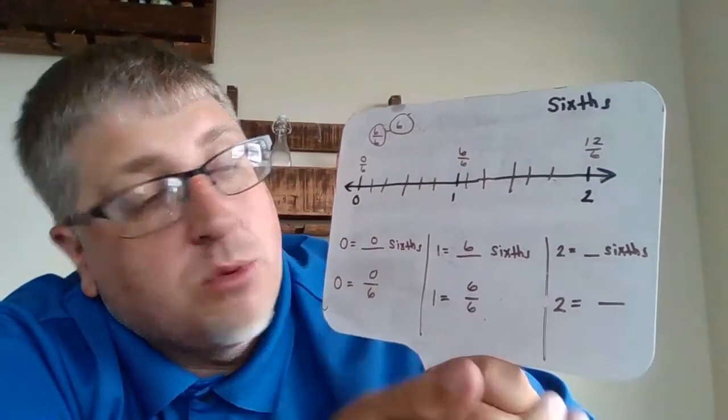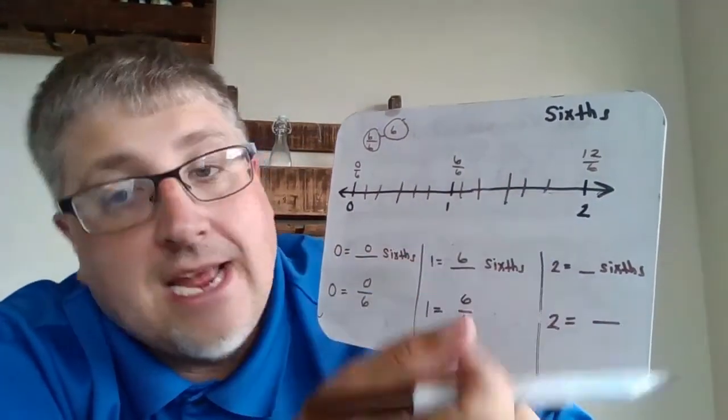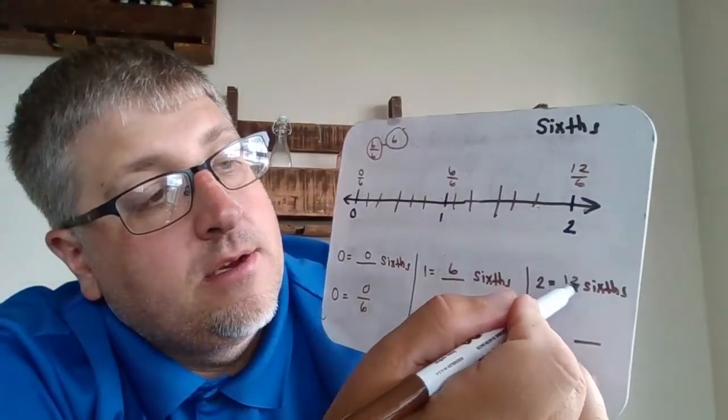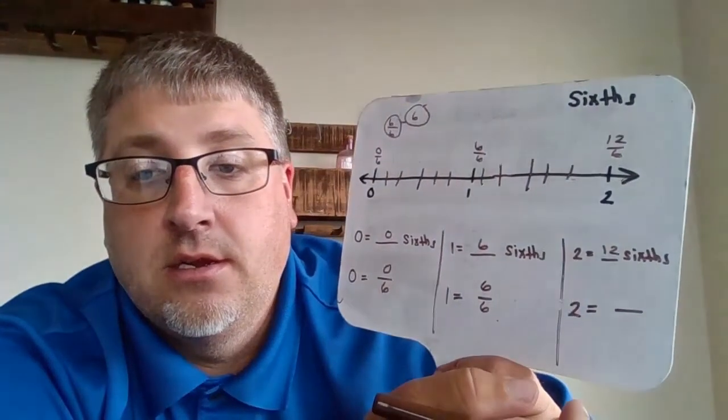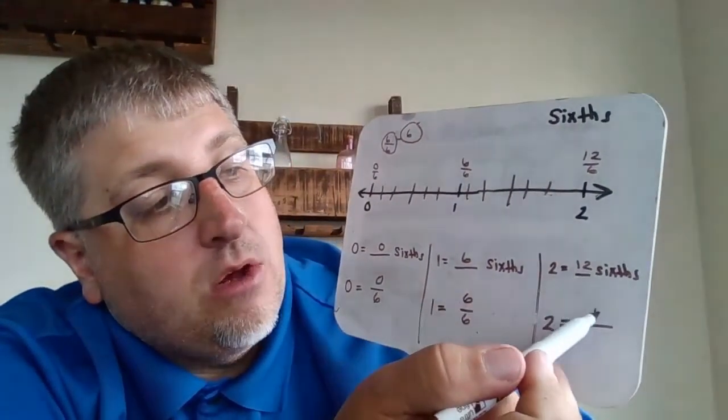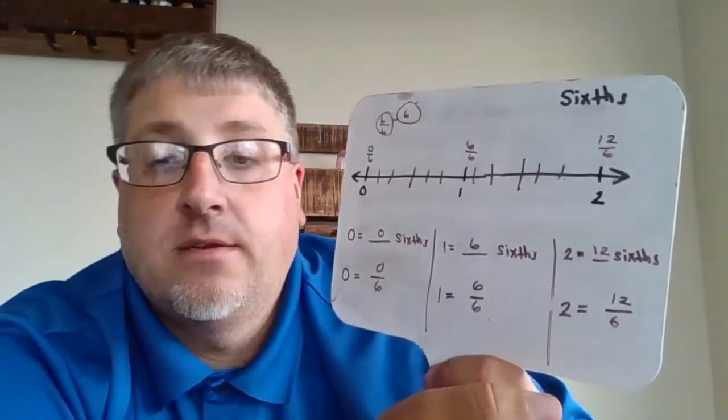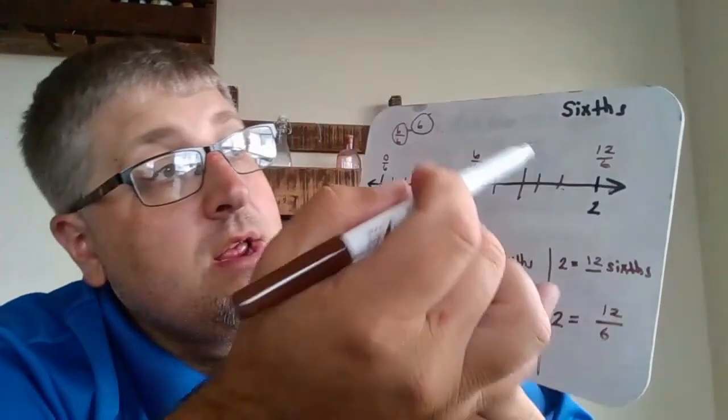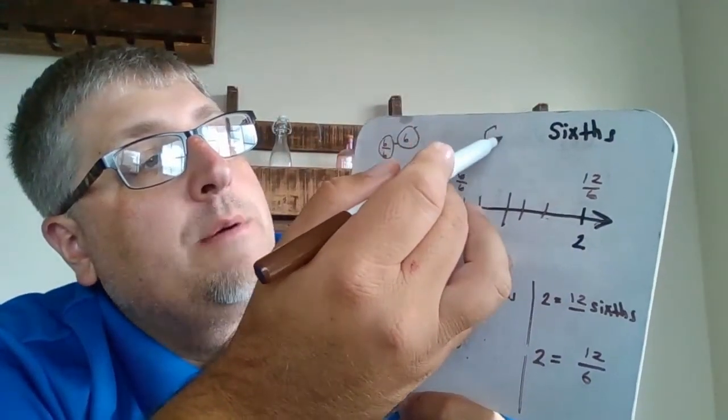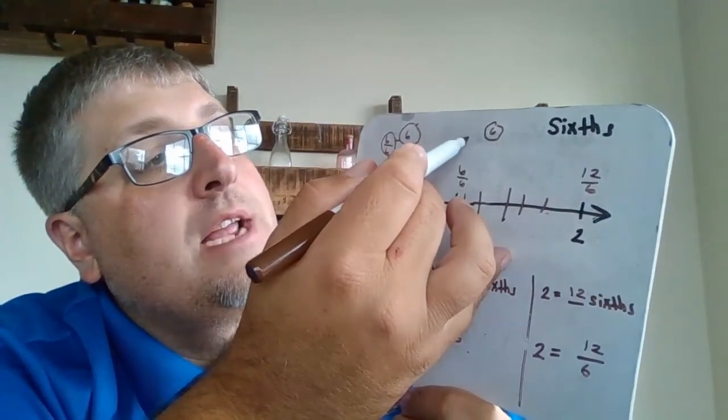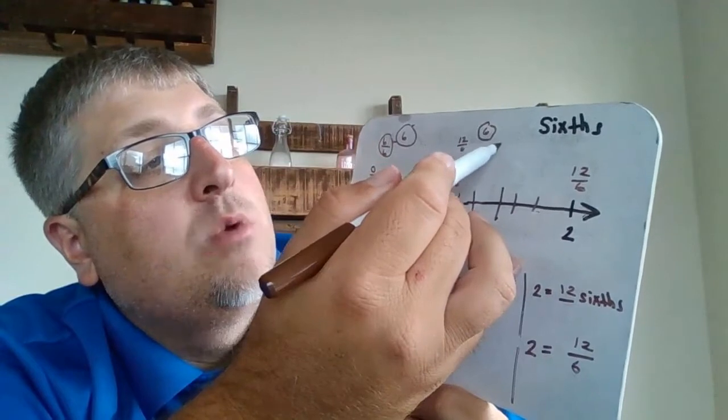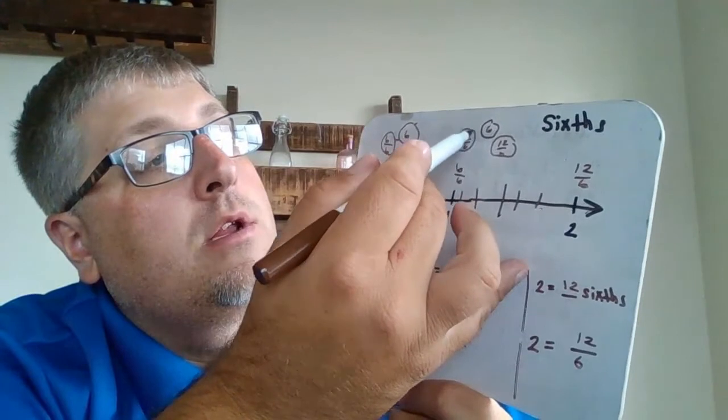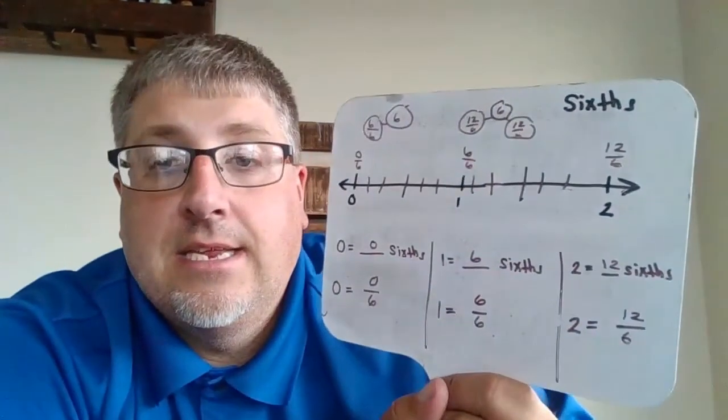Let's take a look at the next one. Our next one says two equals how many sixths. We come over here. We understand that that represents twelve sixths. Twelve sixths. And that fraction will be written 12/6. Just taking what the number line is giving me and writing it out. If I wanted to put that into a number bond, I would put six here. And I would understand that it is two. It's 12/6. And 12/6 would be two of those.